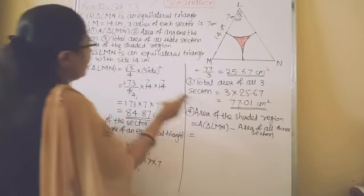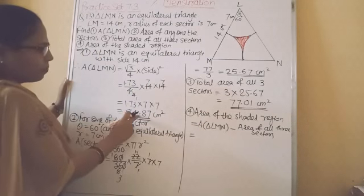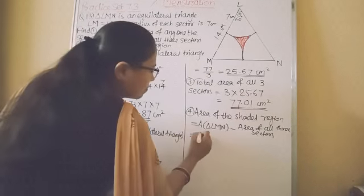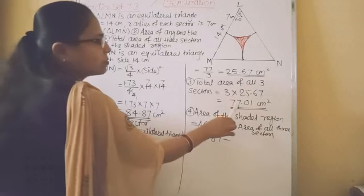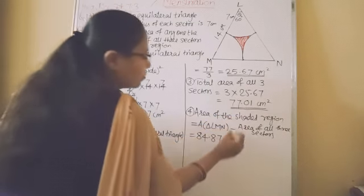So area of triangle L, M, N, we got 84.87. And area of these 3 sectors, we got 77.01.